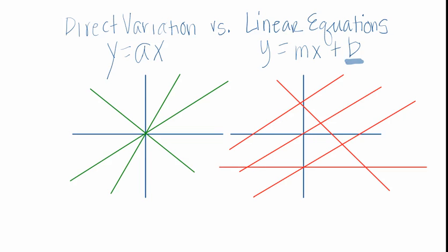Now, you'll notice that right here, this linear graph goes through 0, 0 as well. A line that goes through 0, 0 will be both a direct variation and a linear equation.